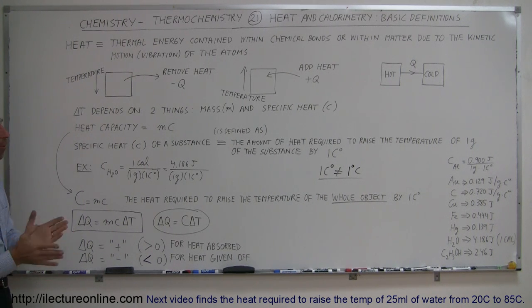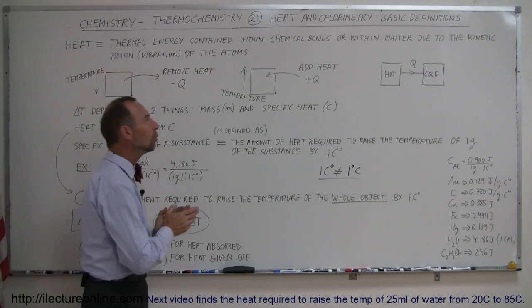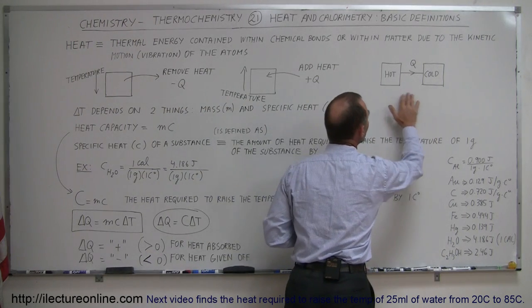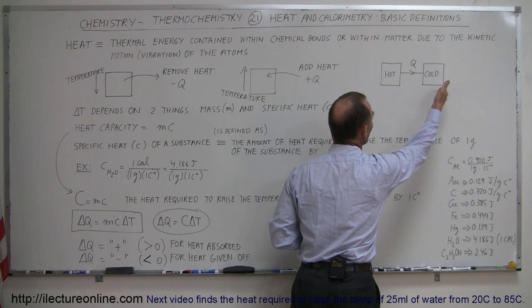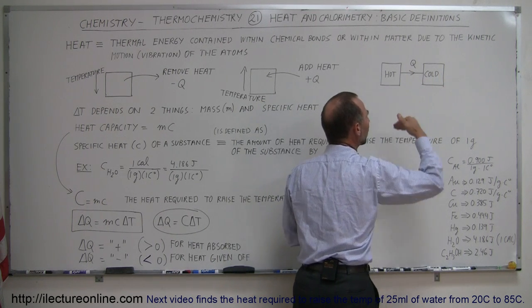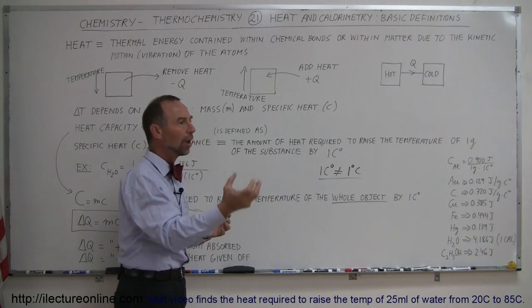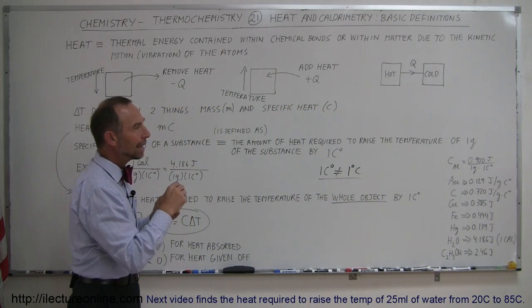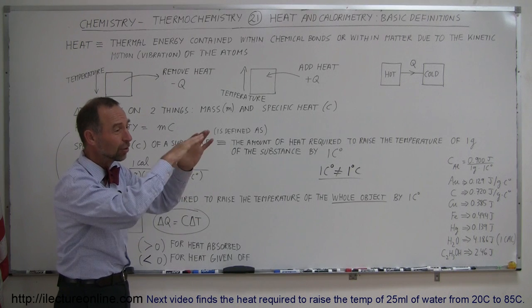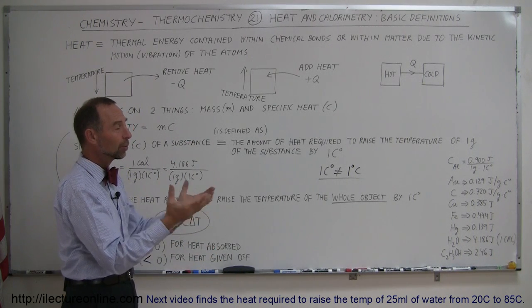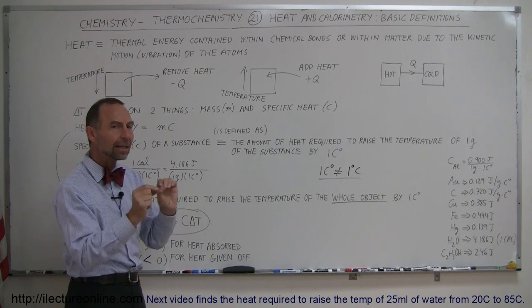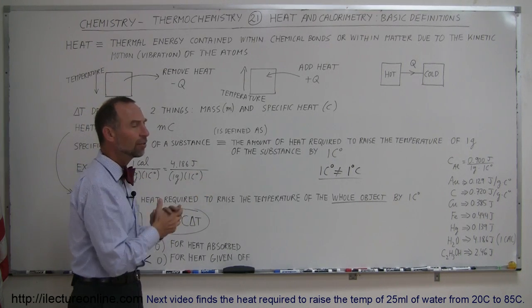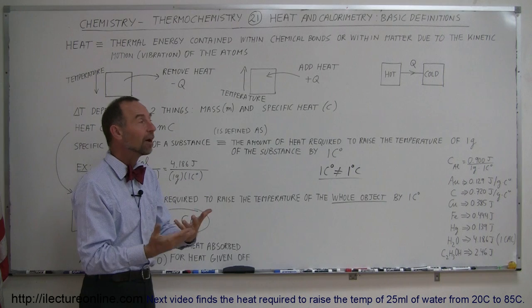Those are the basic principles and definitions of heat. In calorimetry, we deal with heat going back and forth between objects — a hot object gives off heat and becomes colder, while a cold object absorbs heat and gets warmer. In a calorimeter, you put an object in, and if it's hot, it gives off heat to the rest of the calorimeter until thermal equilibrium is reached.